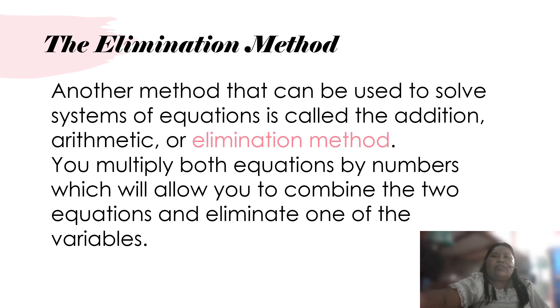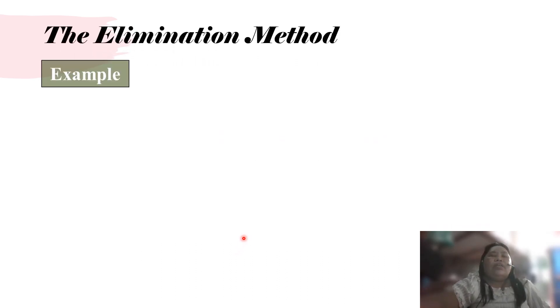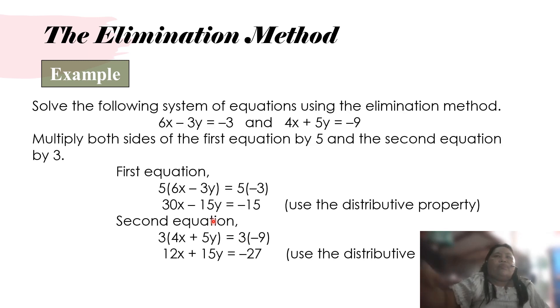For example, solve the following system of equations using elimination method. So we have here two equations: 6x minus 3y equals negative 3, and 4x plus 5y equals negative 9.